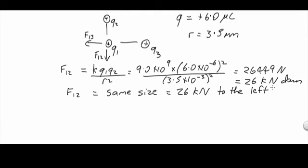So when we add them, we have to add them as vectors. We've got 26 kilonewtons this way, another 26 kilonewtons that way. So we will have a resultant.